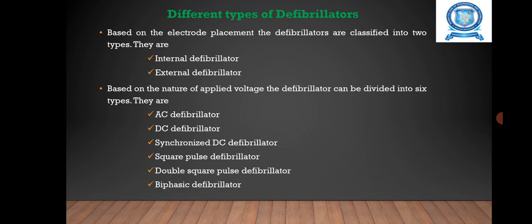There are different types of defibrillators. Based on electrode placement, defibrillators are classified into two types: internal defibrillator and external defibrillator. Based on the nature of applied voltage, the defibrillator can be classified into six types: AC defibrillator, DC defibrillator, synchronized DC defibrillator, square pulse defibrillator, double square pulse defibrillator, and biphasic defibrillator.